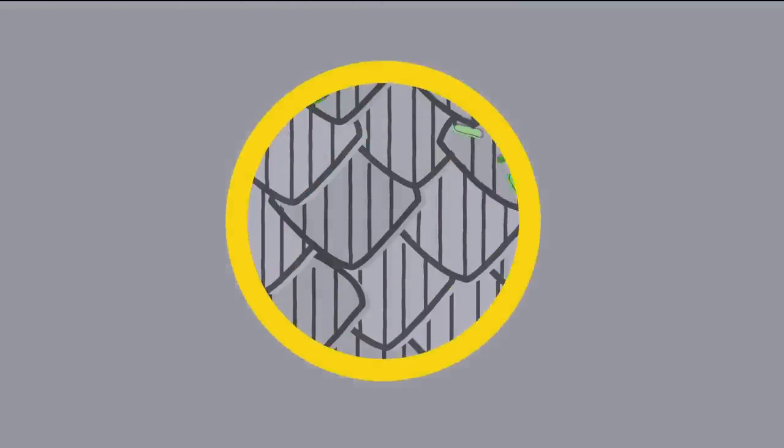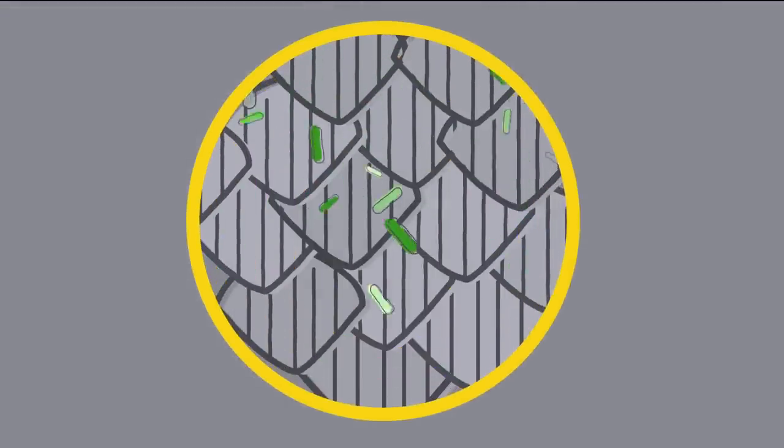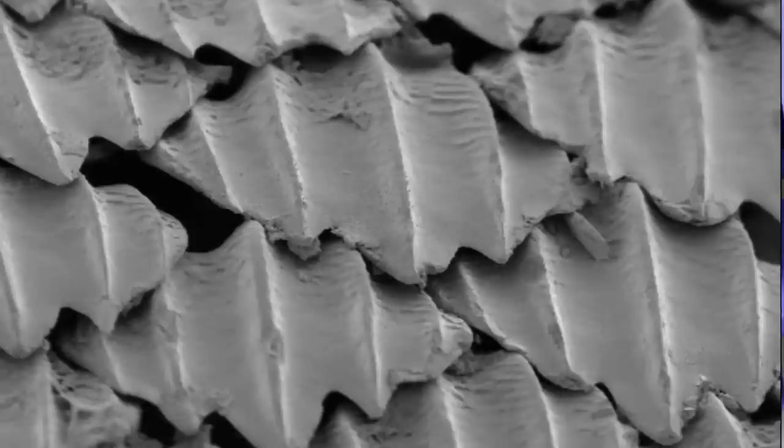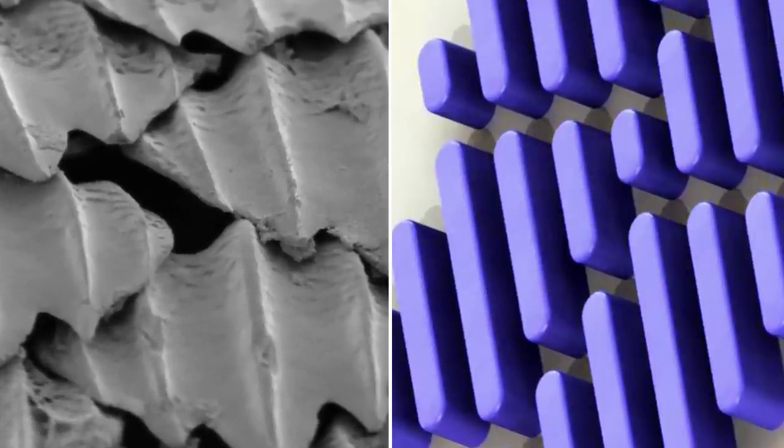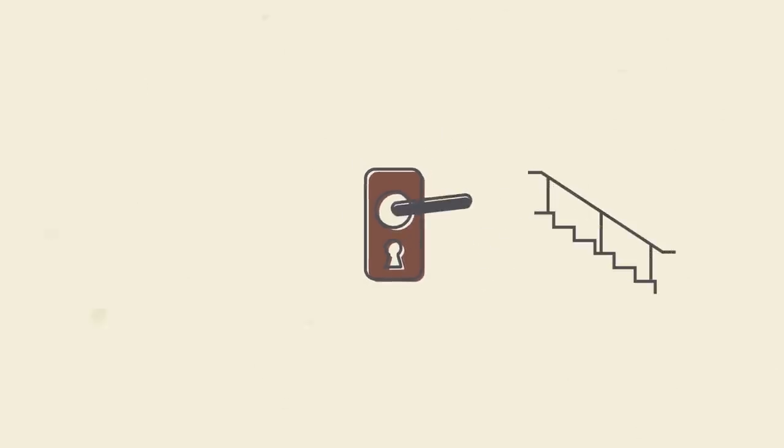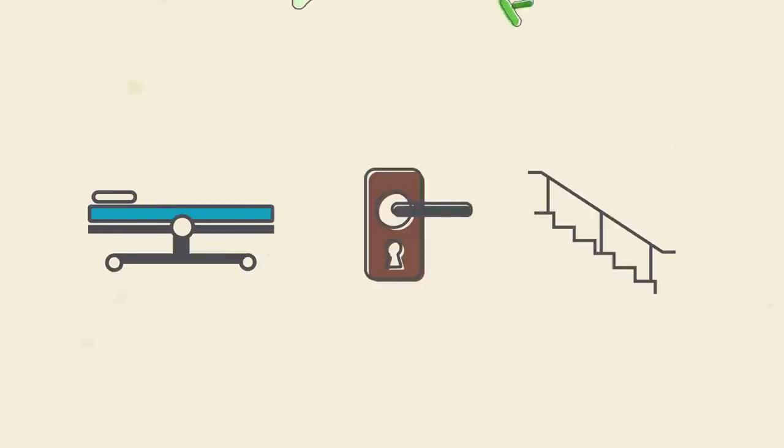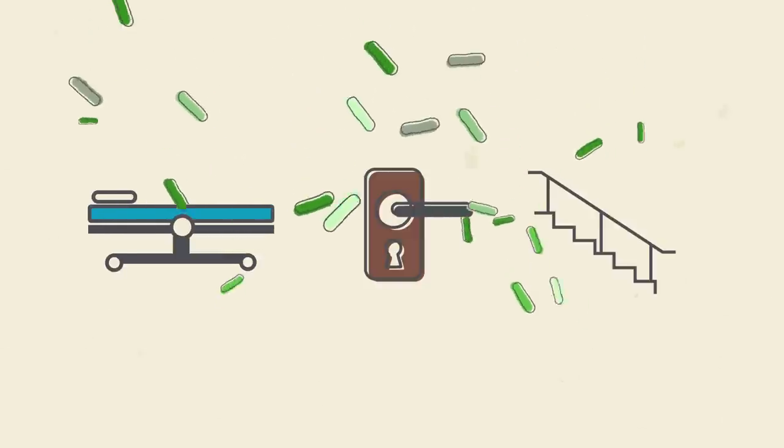What actually was happening was they had nano ridges on them that were uncomfortable for bacteria to land on. A company called Sharklet has mimicked this surface structure to create thin films that you can put on door handles and railings and other hospital surfaces. And bacteria just simply do not like to land there.